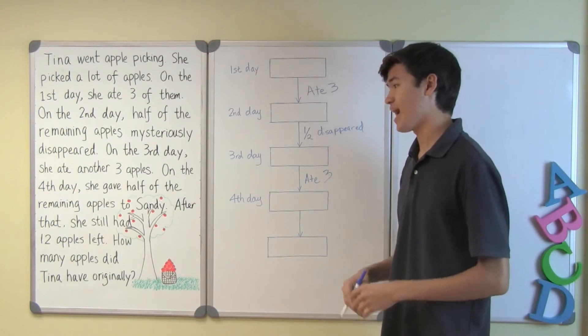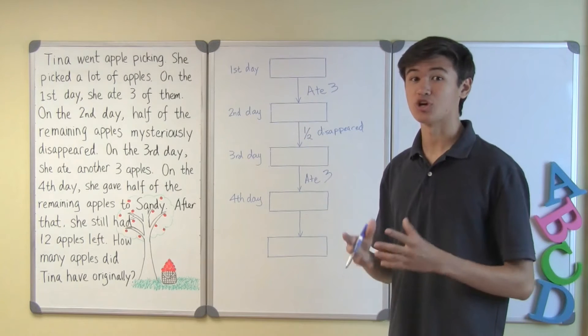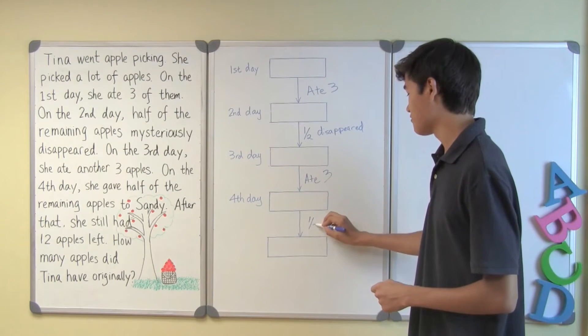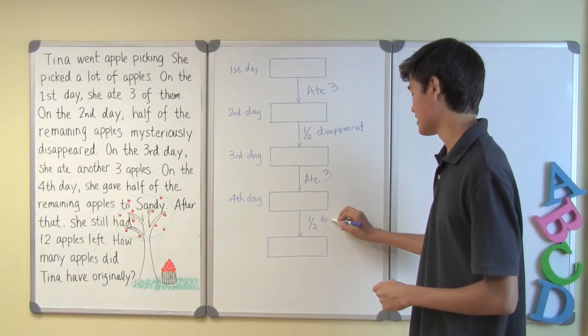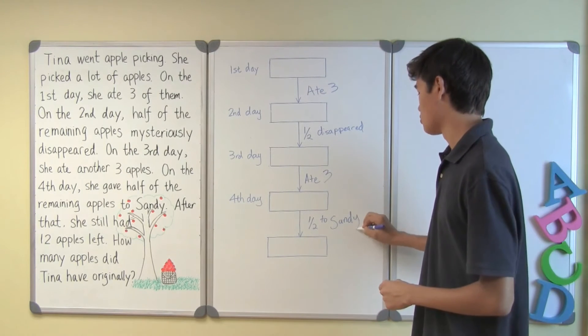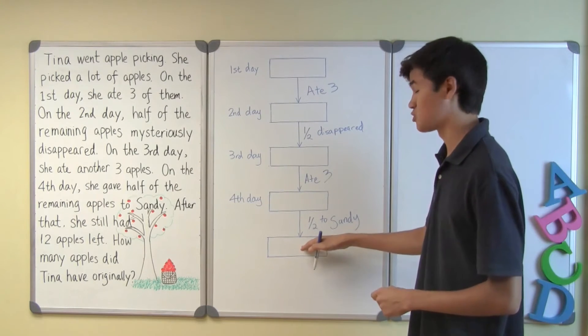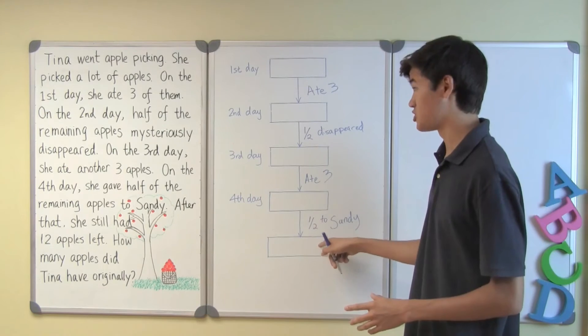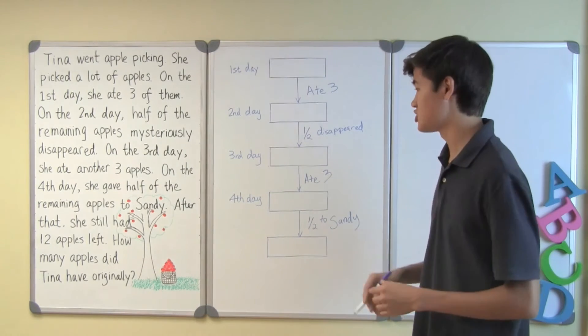On day four, she gave half of the remaining apples to her good friend Sandy. Half to her good friend Sandy. Which will bring us to the very last box, which will show us how many apples Tina had at the end, which is actually given in the question.